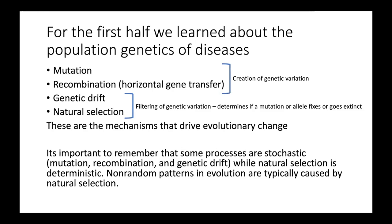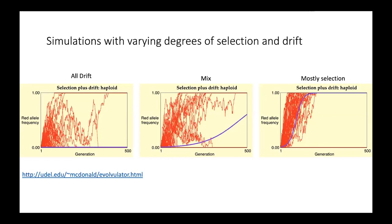Natural selection takes all the good stuff and promotes it, takes all the bad stuff and pushes it out of the population. When you see a non-random pattern in evolutionary biology, that is typically caused by natural selection. Randomness is caused by mutation and genetic drift; non-randomness is caused by natural selection. So a lot of what we talk about today — trying to figure out how diseases evolve — involves asking: what pattern would we expect from random processes, and does the observed pattern deviate from that?